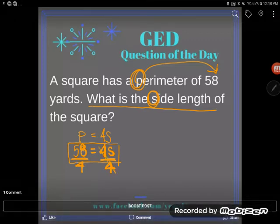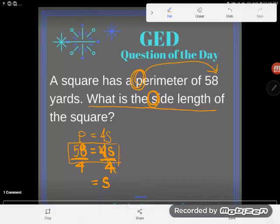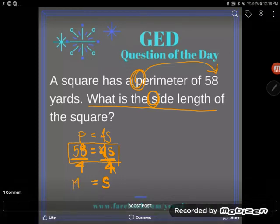Well on this side, 4 divided by 4 gives me just 1s, or as we say just s. 1s is just s. And then 58 divided by 4. Look at that, I end up dividing by 4 whichever way I go, whichever way I solve this problem. In the end it's a division problem. I get 14.5.